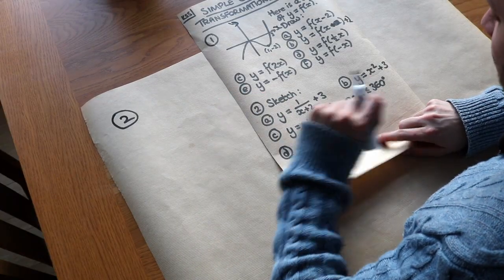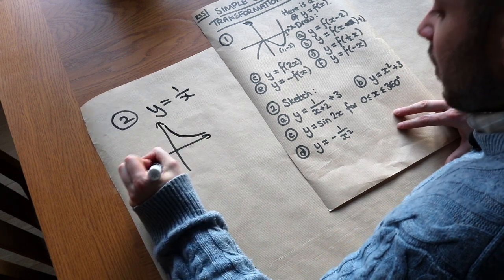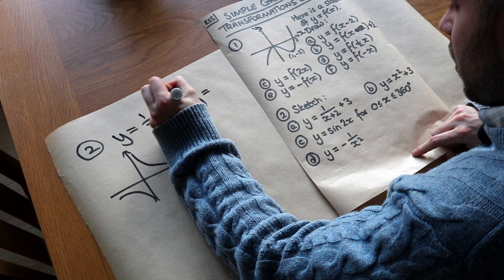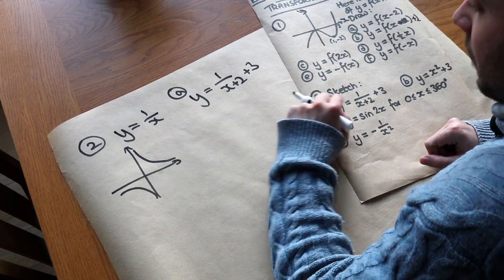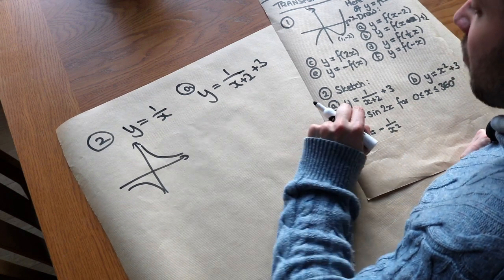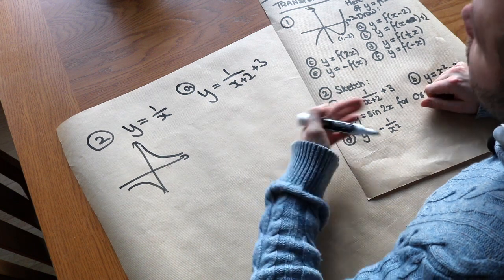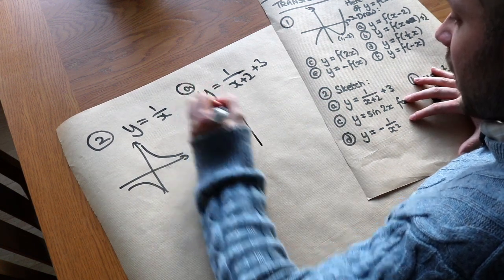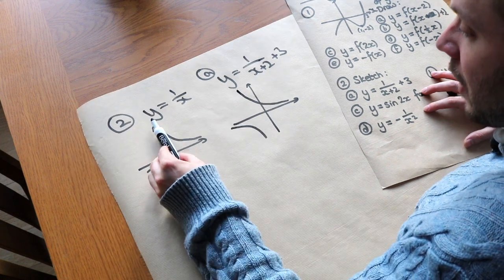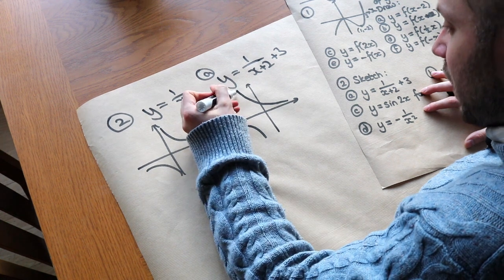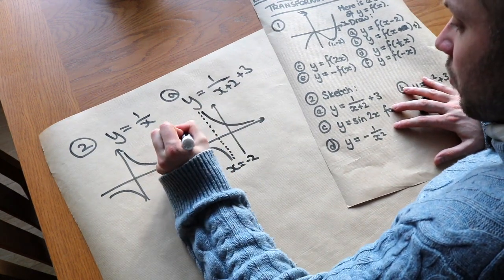We can use these principles to sketch some common graphs. For a reciprocal graph, we know what y equals 1 over x looks like. Let's sketch y equals 1 over (x plus 2) plus 3. First, the plus 2 is inside the reciprocal function, so it affects the x values and does the opposite of adding 2 — a translation of minus 2 in x, i.e. 2 to the left. The vertical asymptote was originally at x equals 0, but now it shifts to x equals minus 2. So this is a sketch of y equals 1 over (x plus 2).